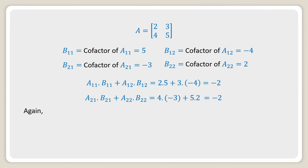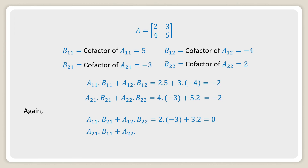Again, taking the first row and the cofactors of the second row: A11 into B21 plus A12 into B22 equals 2 into minus 3 plus 3 into 2, which equals 0. Similarly, taking the second row and the cofactors of the first row: A21 into B11 plus A22 into B12 equals 4 into 5 plus 5 into minus 4, which is also 0. These are the two properties of the determinant used in our theorem.